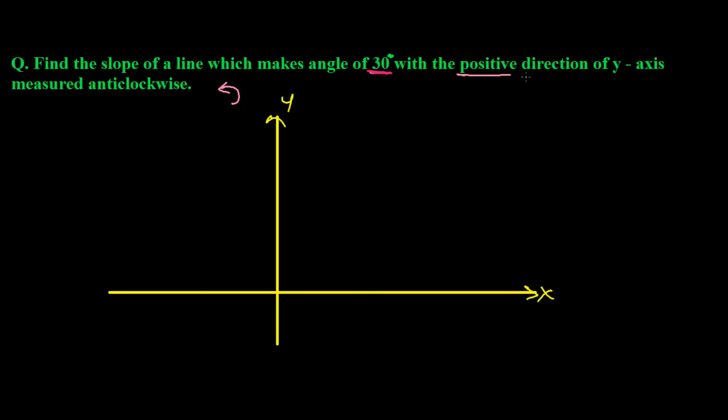This is our positive direction of the y-axis, so with this it is making 30 degrees. This angle should be 30 degrees. So let's draw such a line which is making 30 degrees.